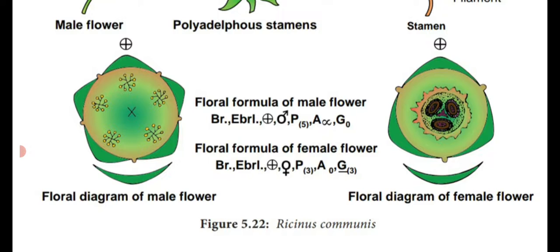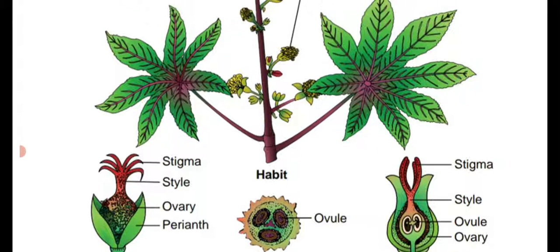Female floral diagram: three tepals — again apophyllous is given but should be synphyllous — fused together. At the center they have the tricarpellary ovary with ovule, spiny nature, three one-seeded cocci. A small triangular shape at the center is the staminode. Female floral formula: Br (bract), Ebrl (bracteole absent), actinomorphic, female symbol, P(3) — perianth three, fused within bracket — A0 (androecium absent — zero), G(3) — gynoecium three, fused within bracket — with a line at the base for superior ovary. This is the botanical description of Ricinus communis, the castor plant.